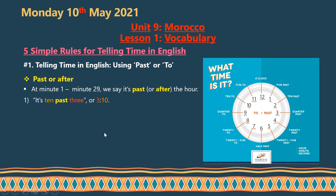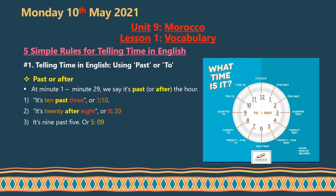Let's look at the examples. Number one: 'ten past three' means 3:10. When telling time in English, you use minutes before the hour — so 10 is the minute and 3 is the hour. Number two: 'twenty after eight' means 8:20.